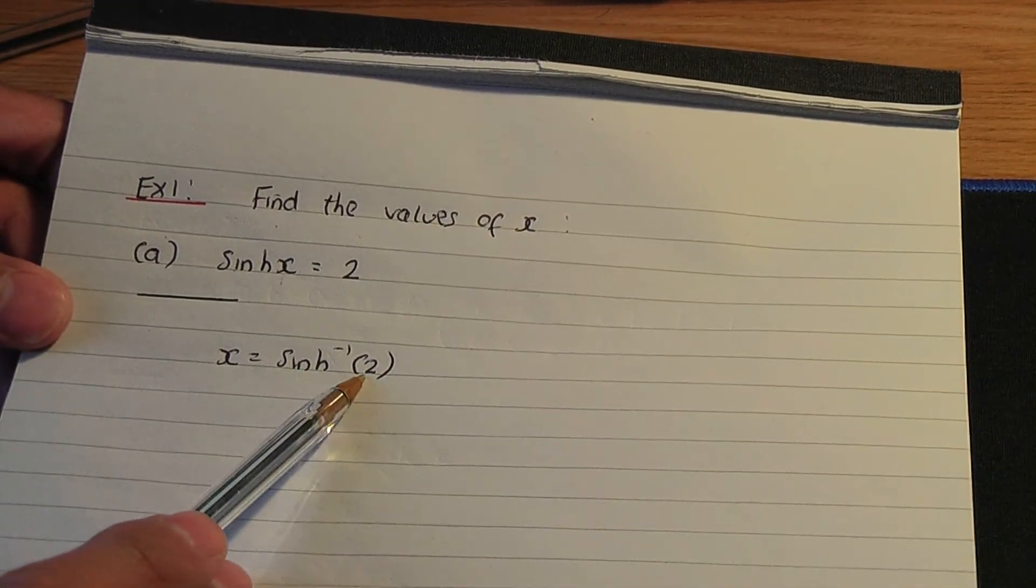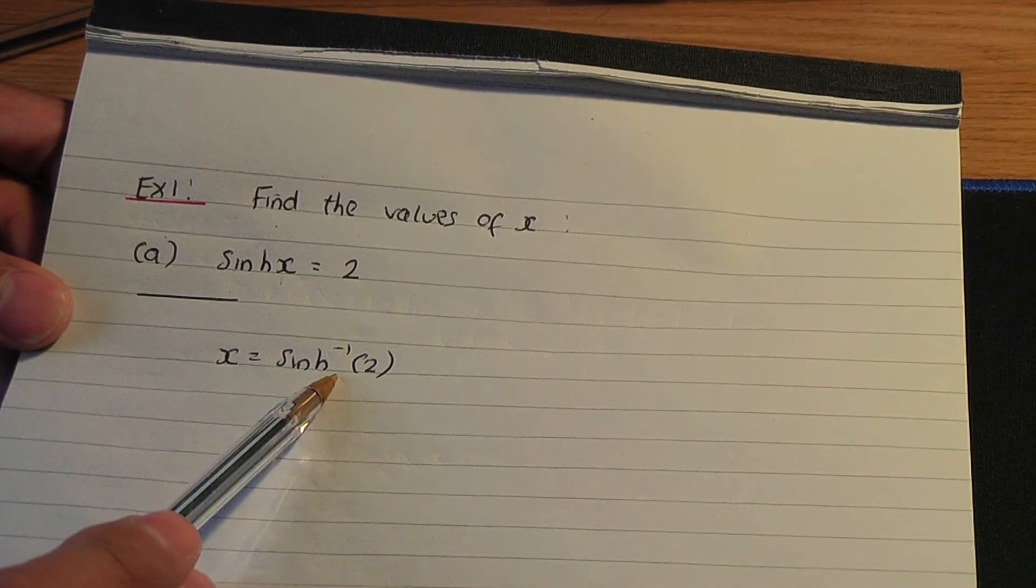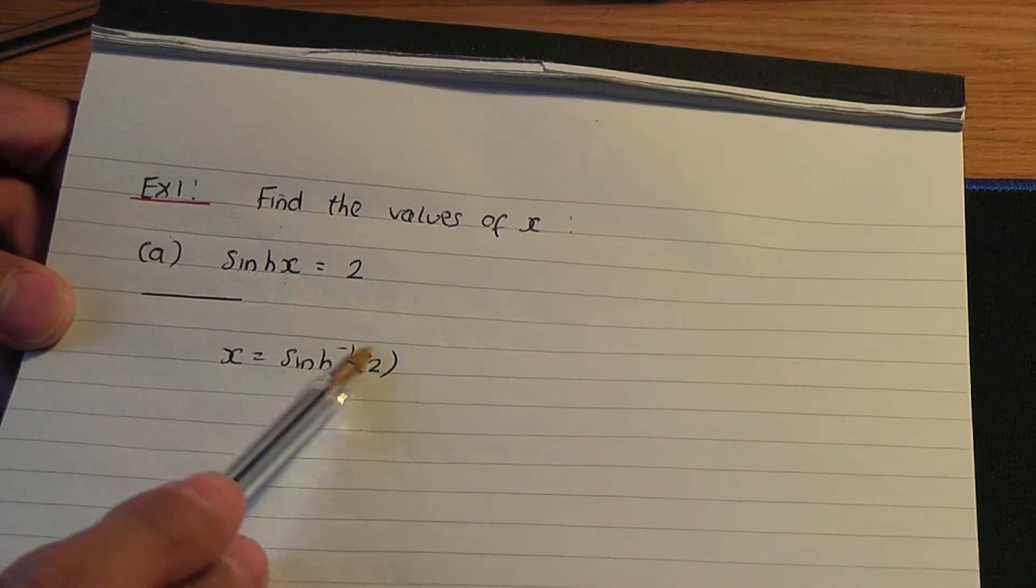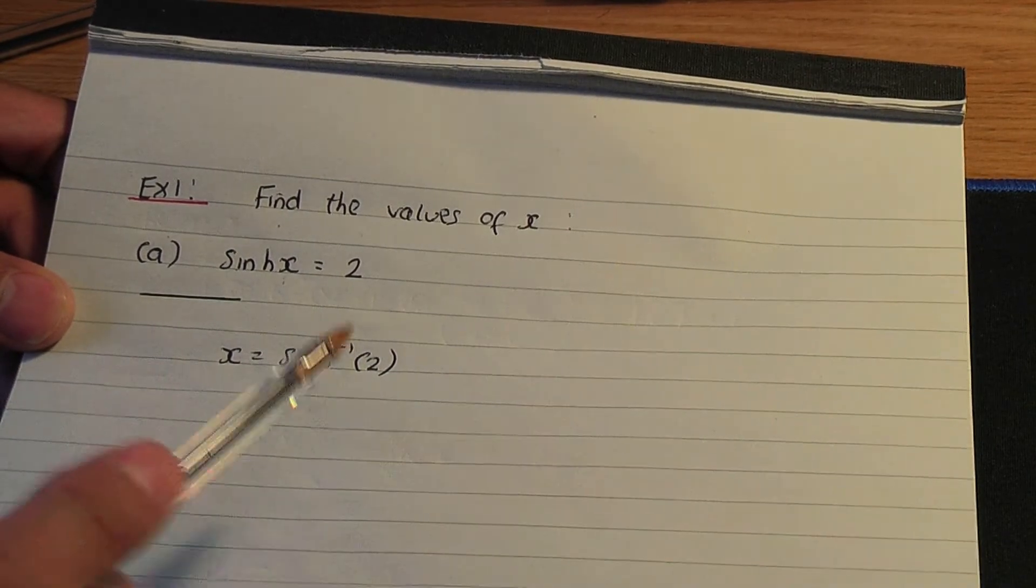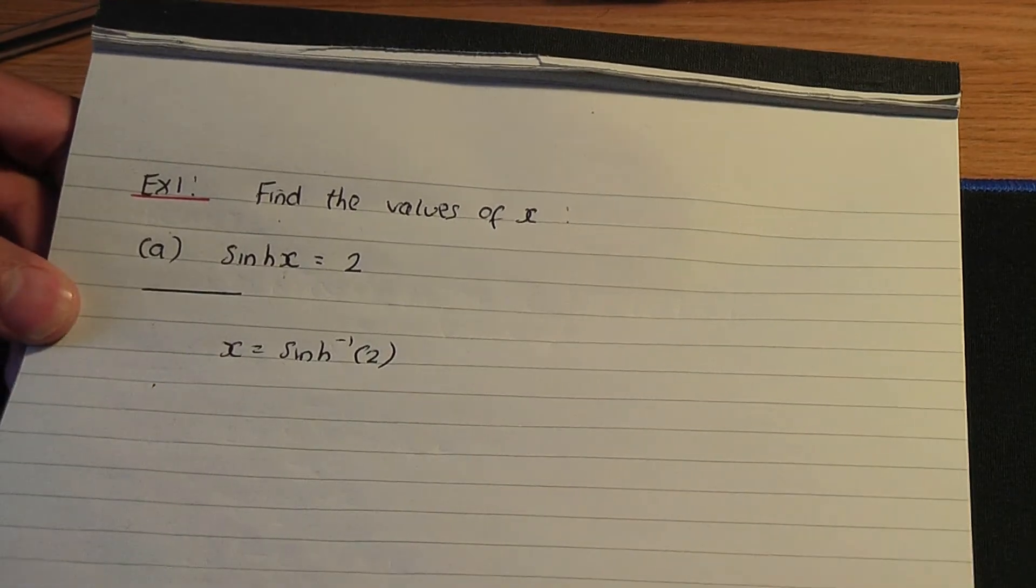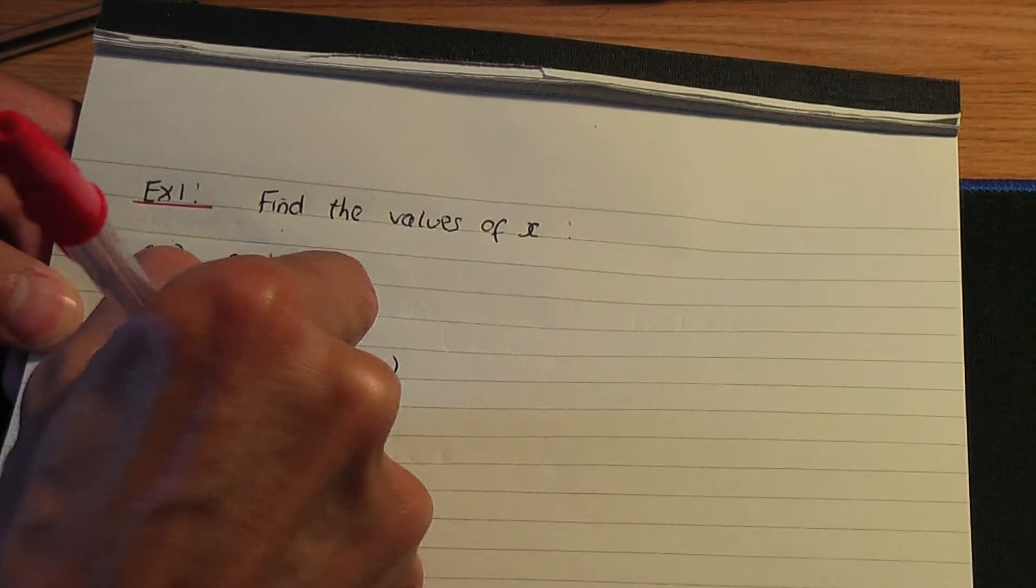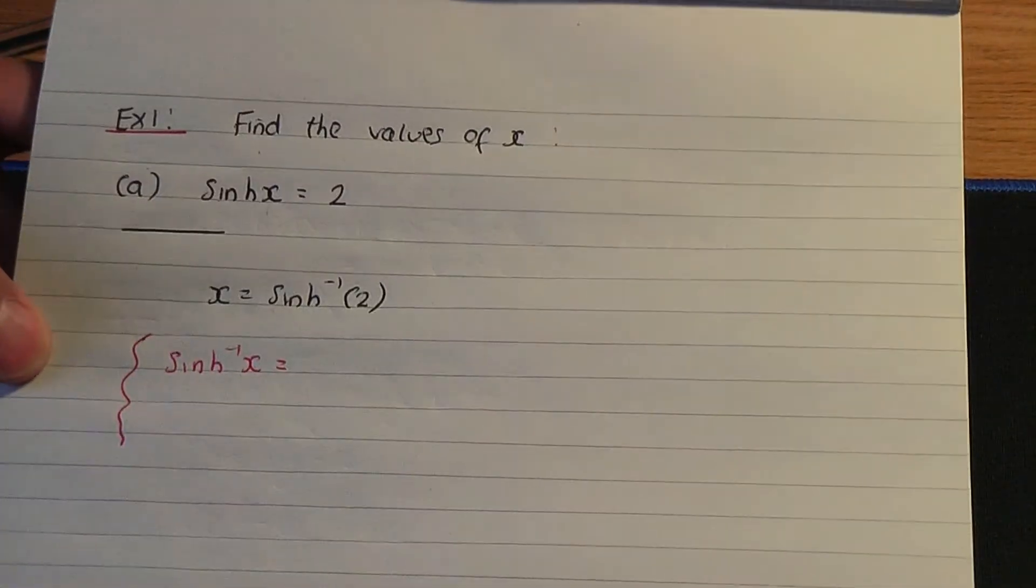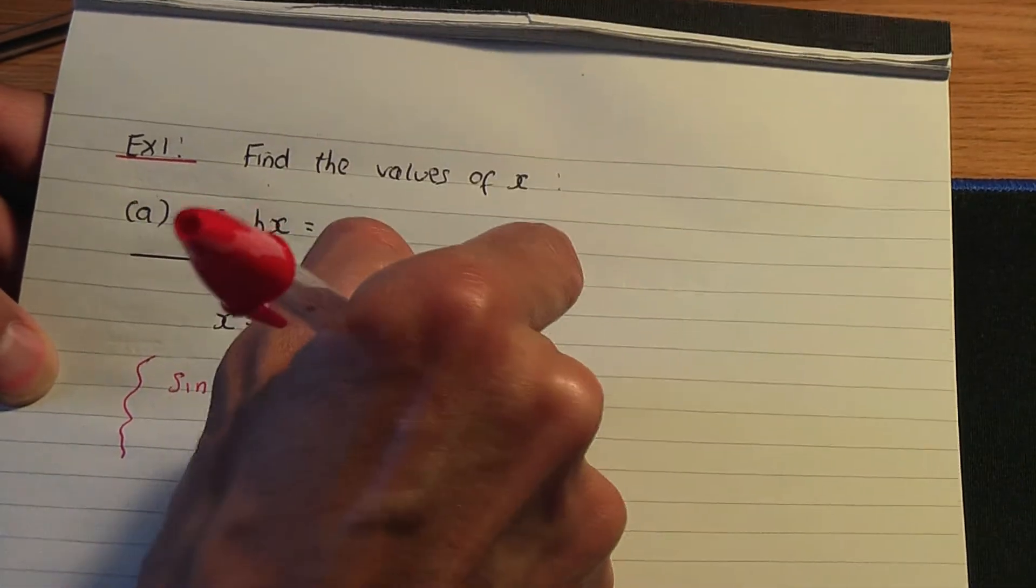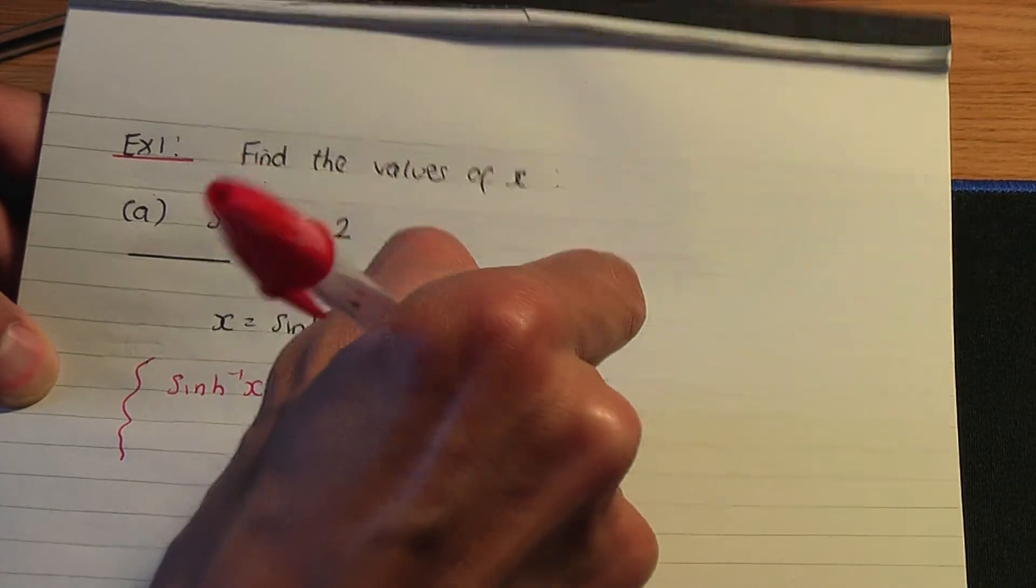To find the inverse hyperbolic sine of 2, if you recall from one of the videos that I did previously, we had a result for the inverse hyperbolic sine of x. Let me write that out in red to remind you. The inverse hyperbolic sine of x had the result ln x plus the root x squared plus 1.